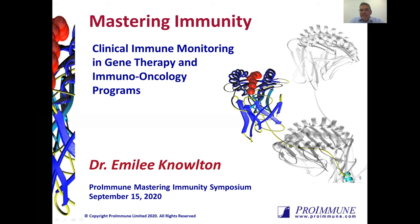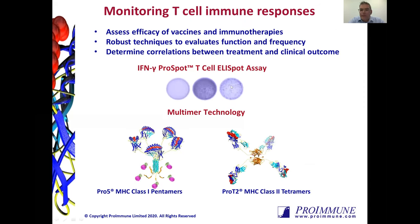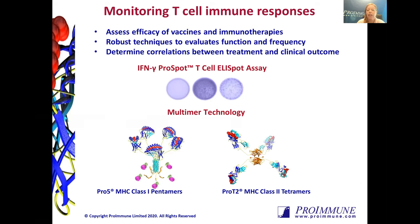Thank you for that introduction, Jeremy. One of the major ways to assess the efficacy of vaccines and immunotherapies is to monitor functional and antigen-specific T cell responses. How you track those T cell responses and what you're measuring against will be determined by a number of factors specific to your study. Some groups look at well-defined HLA-restricted immunodominant epitopes from multiple antigens, while others may use a large overlapping peptide library from a single antigen to designate a positive or negative response. Each approach should be tailored to answer the questions relevant to that study.